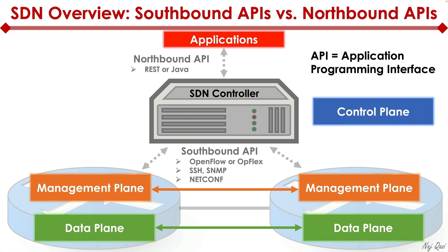When it comes to defining what the SDN controller needs to do, that's where the northbound API comes in. The northbound API typically leverages RESTful API — REST stands for Representational State Transfer — or it could use a Java API. RESTful API is the most popular because it uses HTTP verbs, which we'll discuss in a moment.